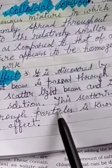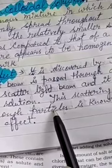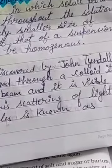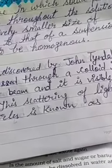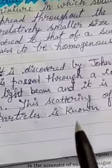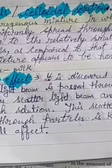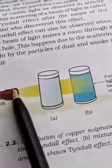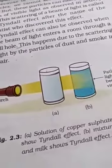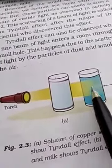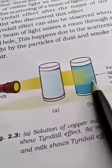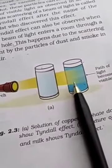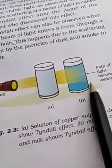This effect is also shown by suspensions, but only when the particles are suspended in the solution. Once they have settled down, we cannot see this effect in suspensions. So, when a light beam is passed, the particles of the solution scatter the light and it becomes visible to us. This scattering of light by the particles of a solution — whether it is a suspension or a colloid — is known as the Tyndall effect.